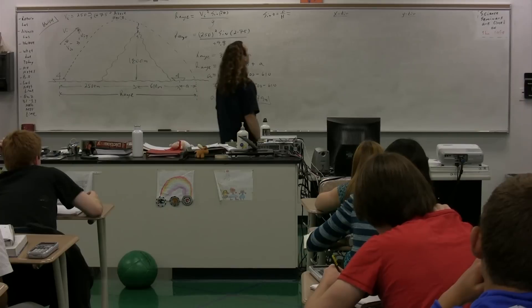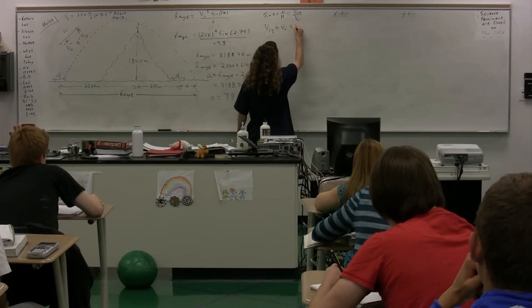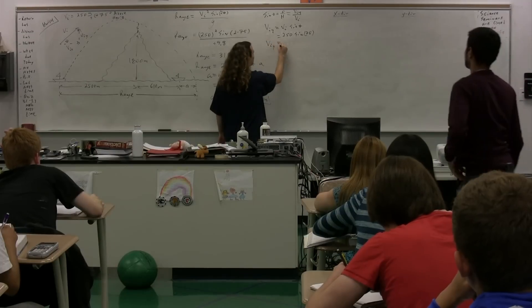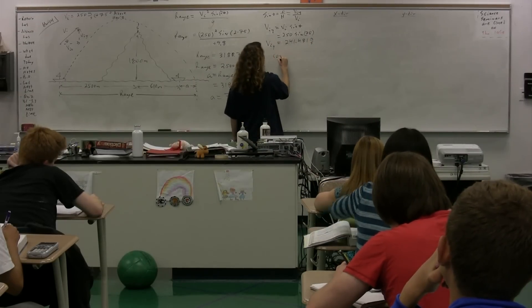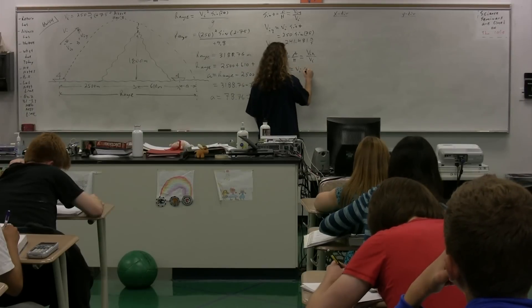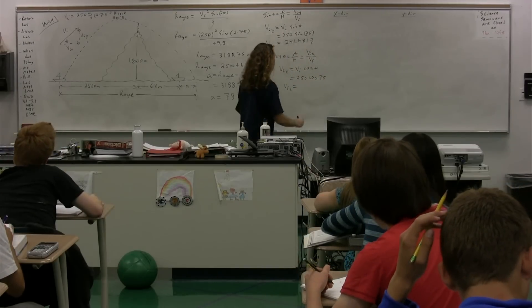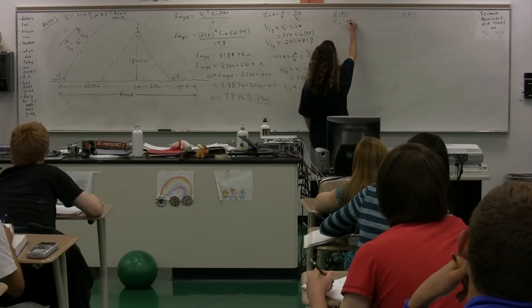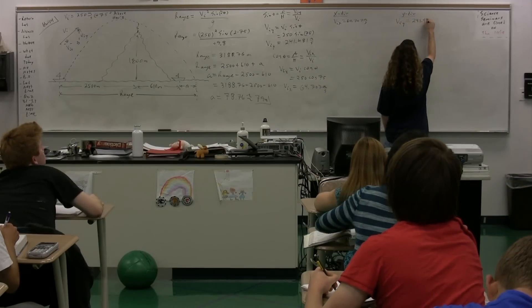What's opposite theta? The velocity initial in the y-direction. And the hypotenuse is the velocity initial. So the velocity initial in the y-direction equals the velocity initial times sine of theta: 250 times sine of 75 degrees, which gives 241.481 meters per second. Similarly, using cosine, the velocity initial in the x-direction equals the velocity initial times cosine of theta: 250 times cosine of 75 degrees, which equals 64.707 meters per second.